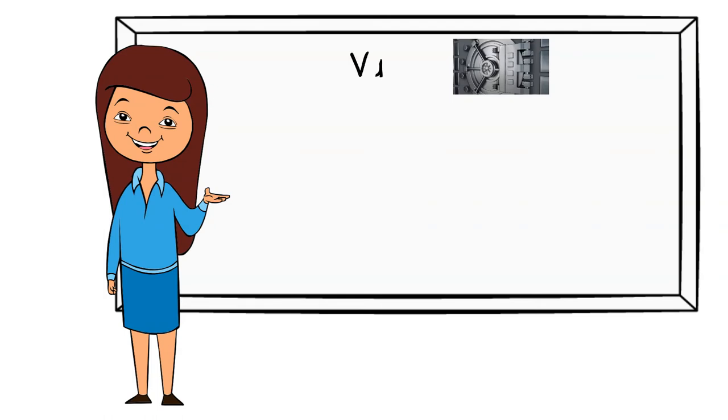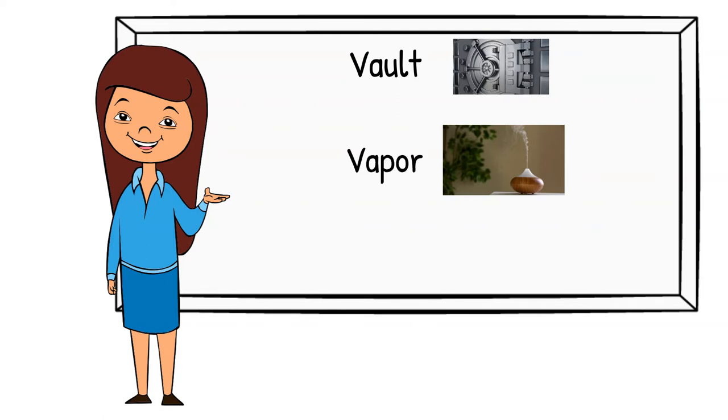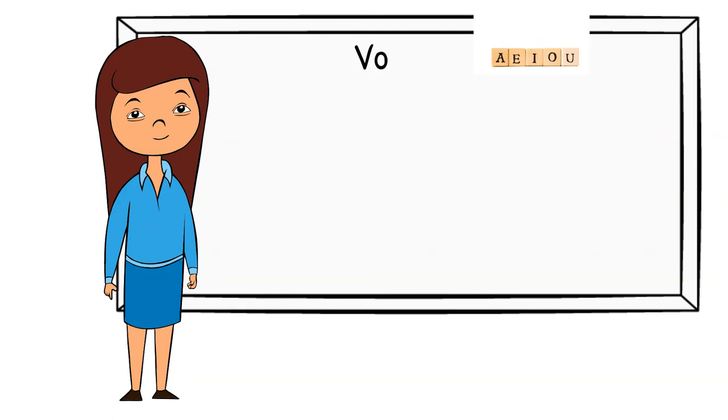Vault. The bank vault is very secure. Vapor. My essential oil diffuser has a wonderful vapor. Vows. This is a picture of someone with wedding vows. Vowels. In the English language are A-E-I-O-U and sometimes Y.